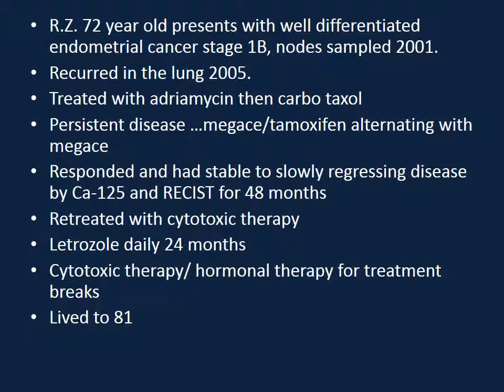She was treated with standard chemotherapy — adriamycin and carboplatin/taxol — and then had persistent disease. She was treated with tamoxifen alternating with Megace, which is a progesterone, and had stable to slowly regressing disease by this criteria for almost four years. She was then treated with cytotoxic therapy, then an aromatase inhibitor in the form of letrozole or Femara, and finally cytotoxic therapy. She lived to be 81 years old, living with recurrent disease for over eight years.